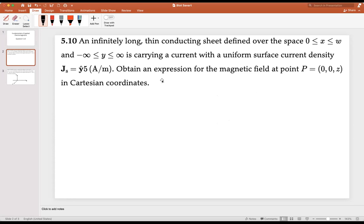The problem says an infinitely long, thin conducting sheet defined over the space from 0 to W in the X direction and from minus infinity to infinity in the Y direction is carrying a uniform surface current density given as Js = ŷ5(A/m). We have a surface current density in amps per meters in the positive Y direction. We want to obtain an expression for the magnetic field at point P in Cartesian coordinates.